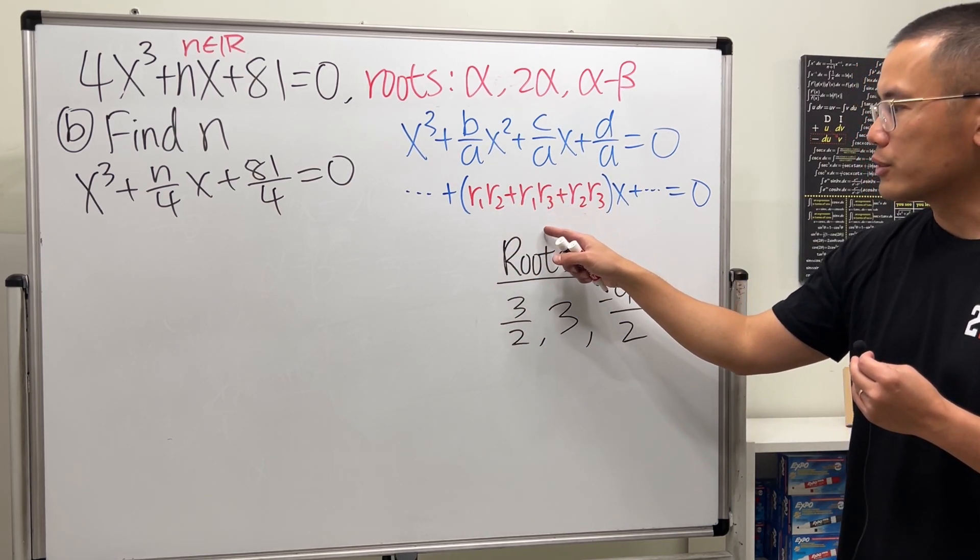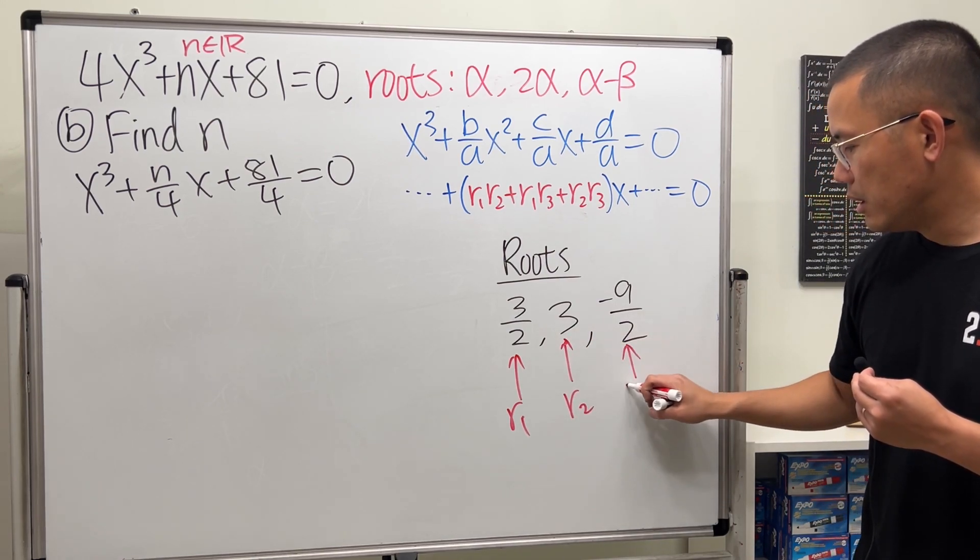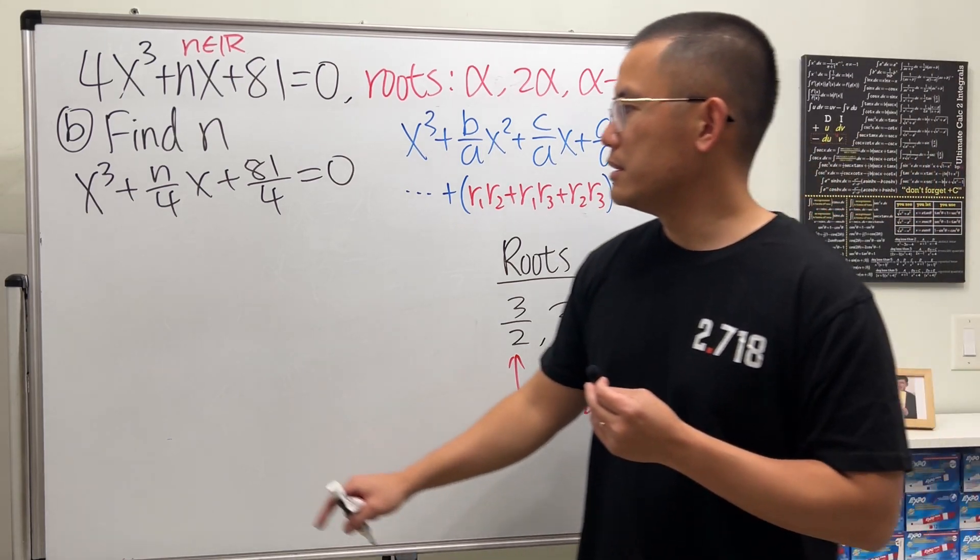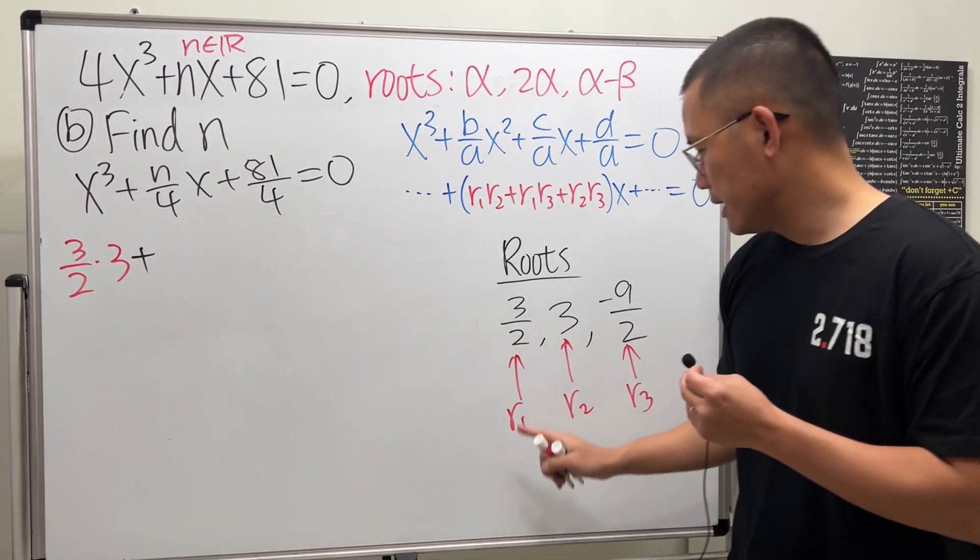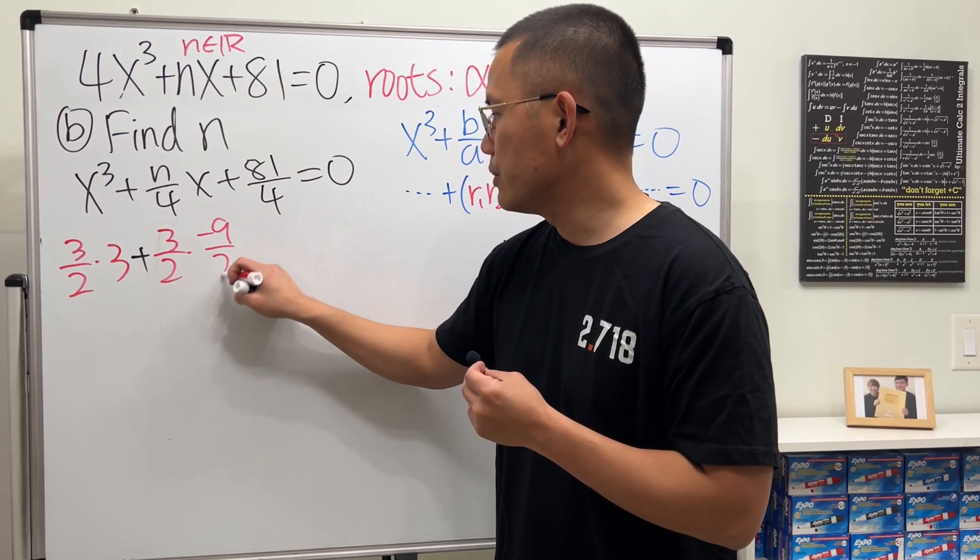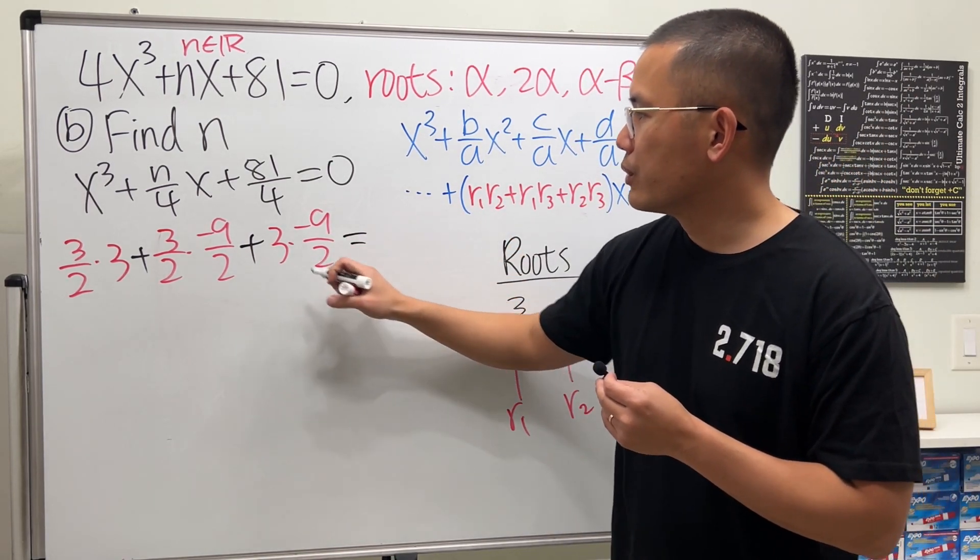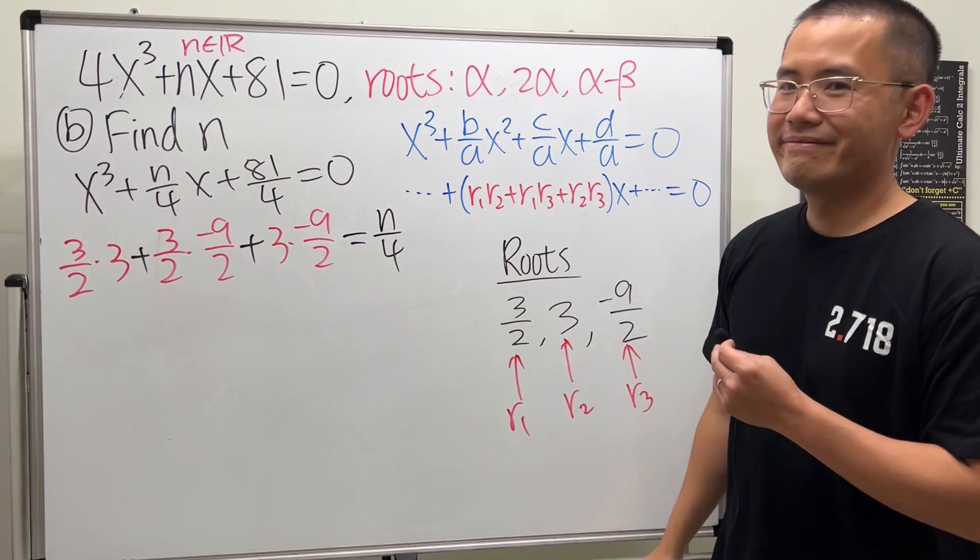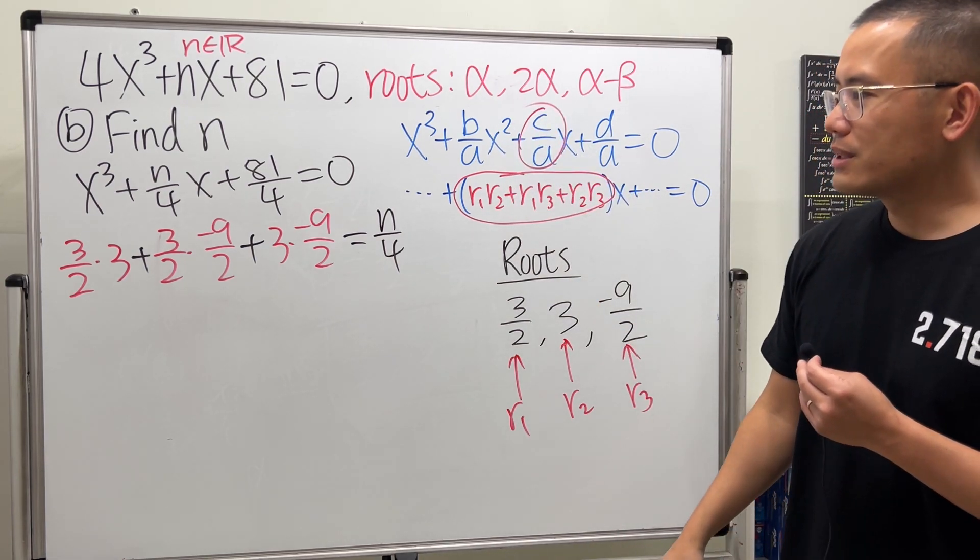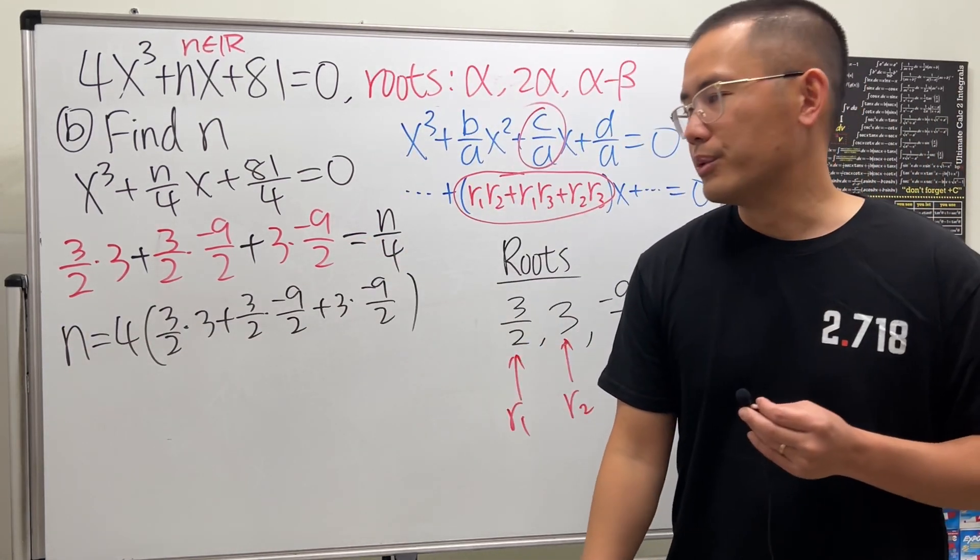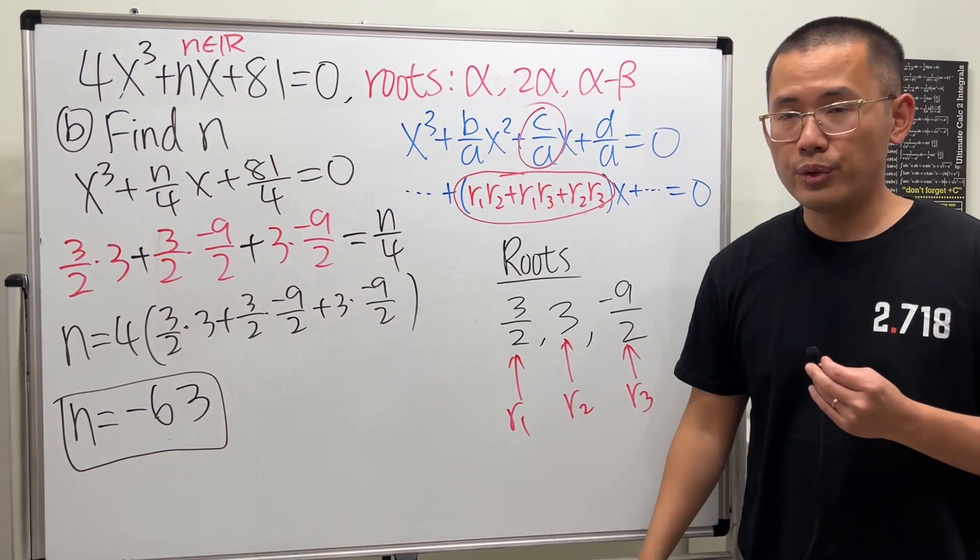Now, for the coefficient of x, it's just the product of any two of the roots and then just add them up. So r1·r2 + r1·r3 + r2·r3. And these are the roots that we found earlier. So this is r1, r2, r3. So all we have to do now is to just do this times this. So we have (3/2) × 3, and then we add this times this: (3/2) × (-9/2), and then we add this times this, which is 3 × (-9/2). And then all that should be equal to this coefficient, which is n/4. So again, we're trying to match the coefficient, just like that. So of course, the rest is just you can multiply both sides by 4. So I'll tell you the answer for this right here, n will be equal to -63. How did I do that so quickly? Because I have the answer right over there.